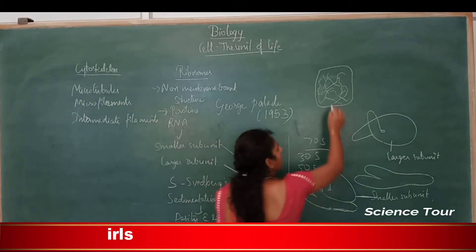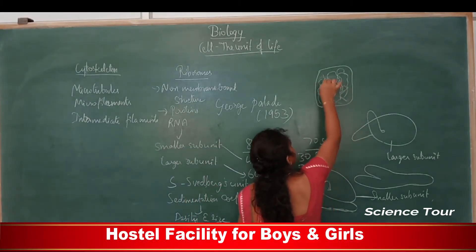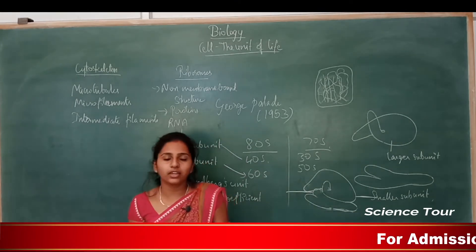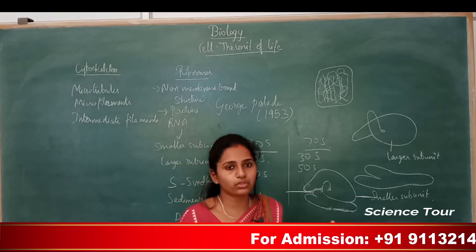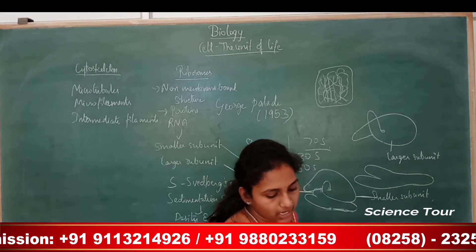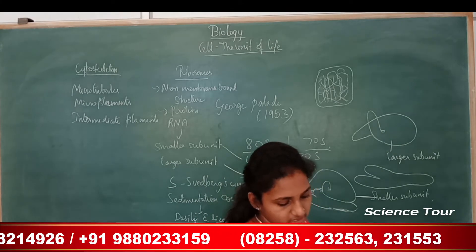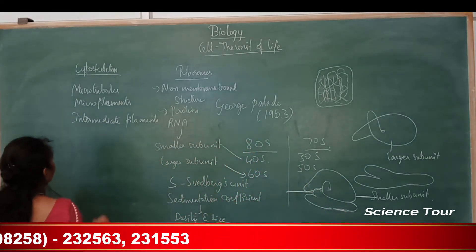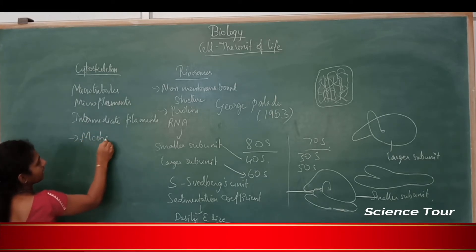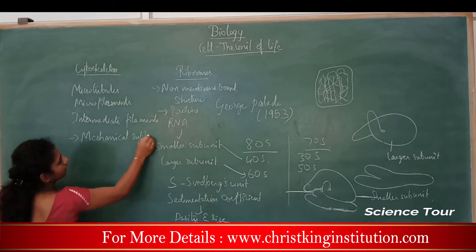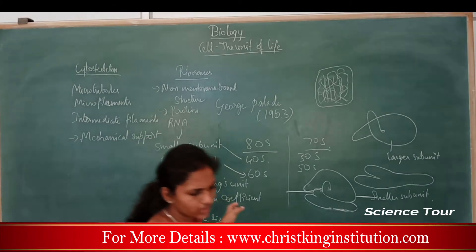The cytoskeletal system gives definite shape and mechanical support to the cell. You can see microtubules, microfilaments, and intermediate filaments in the cytoplasm, all collectively called the cytoskeletal system. The cytoskeleton is involved in many functions: mechanical support to the cell, motility, and providing a definite shape.